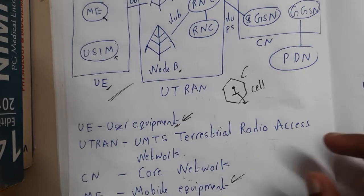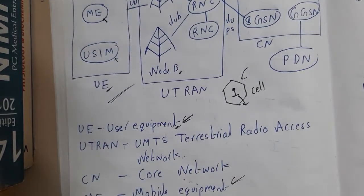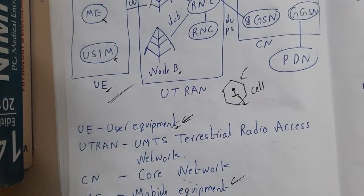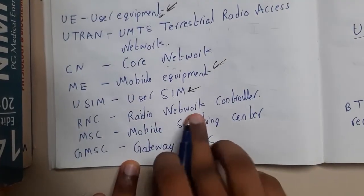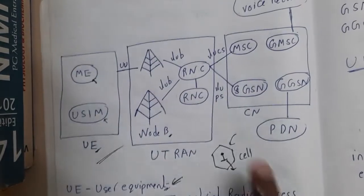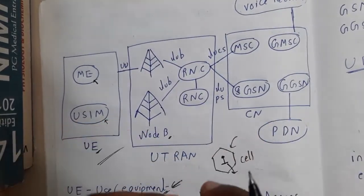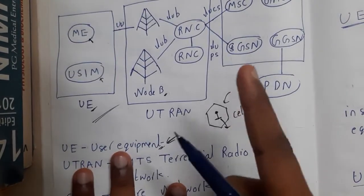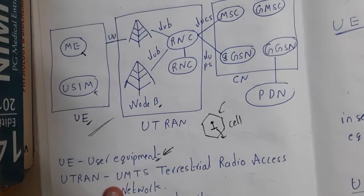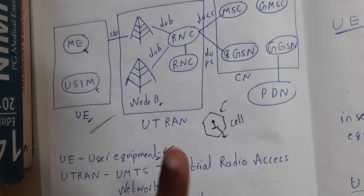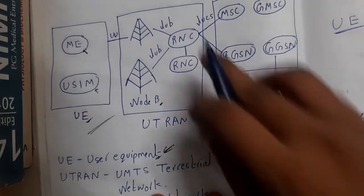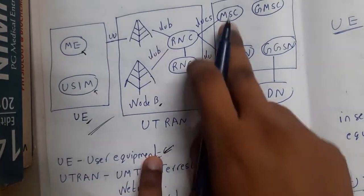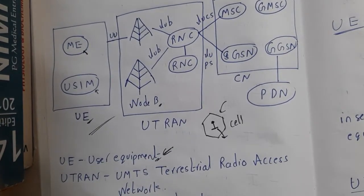Once connected to the Node B, it is connected to the RNC — that is, Radio Network Controller. It is used to control calls, manage them, and route them. The major change here compared to GSM and GPRS is that in UMTS you can have multiple controllers, not just a single one.